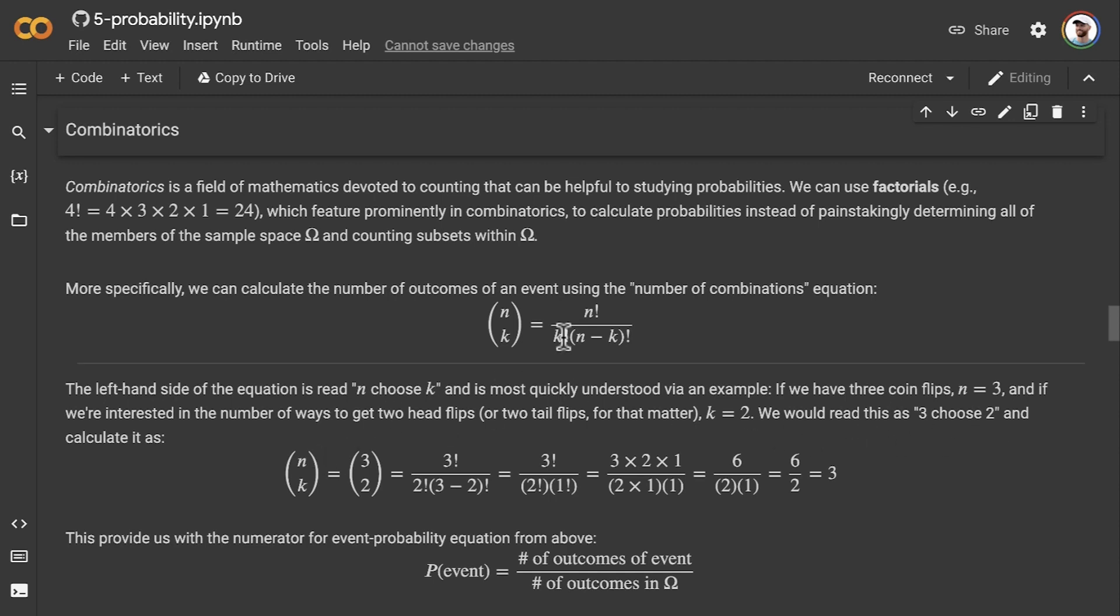Then we just plug the numbers into our equation. So our n choose k equation, three choose two, we just take this right-hand side of the equation, reproduce it here, and fill in the numbers. We've got n = 3 on top and down here in this position, and k = 2 here and here. We can do some subtraction: 3 - 2 = 1, and then expand out these factorials. 3 factorial is 3 × 2 × 1, which equals 6. 2 factorial is 2 × 1, which equals 2, and 1 factorial is 1. Multiplying 2 × 1 in the denominator leaves us with 2. Six divided by 2 equals 3.